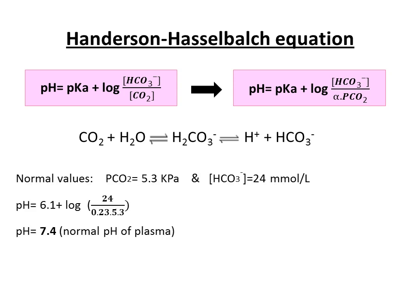Now let's calculate the normal value of blood pH. The normal values of pCO2 and HCO3⁻ are given. The pKa of plasma is 6.1, and alpha, the coefficient of solubility of CO2 in plasma, is 0.23. So the pH is equal to 7.4.